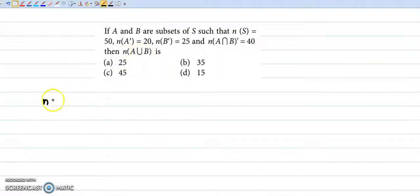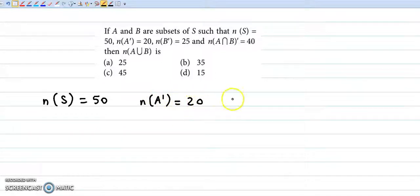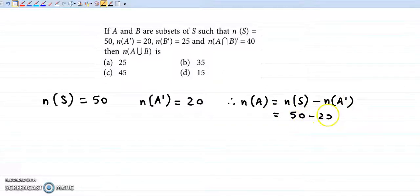Now we have number of elements in A complement as 20. So here we will find number of elements in A as number of elements in S minus number of elements in A complement, that is 50 minus 20, which gives us 30 elements.